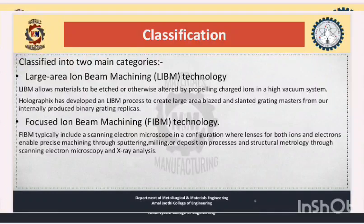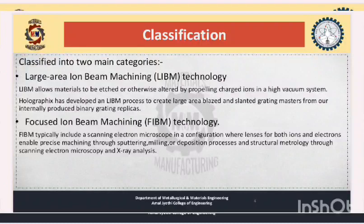The second type is focused ion beam machining technology, simply called FIBM. It typically includes a scanning electron microscope in a configuration where lenses for both ions and electrons enable precise machining through sputtering, milling, or deposition processes, structural metrology through scanning electron microscopy and material analysis.